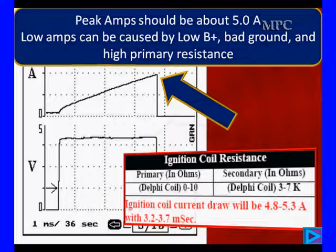Peak amps should be around five on this particular one, and it says 4.8 to 5.3. Bingo, we have five. We're right in the middle of the specs. On time is 3.2 to 3.7 milliseconds. We know that's coming from the PCM. Look at all the diagnostic directions we have. With each measurement we take, we're getting a direction. If it's wrong, where are we going to go?